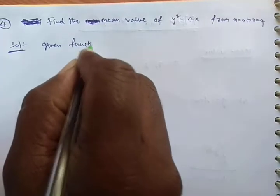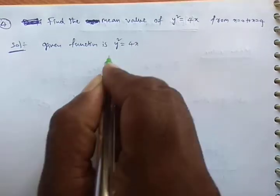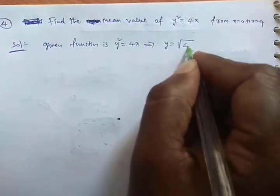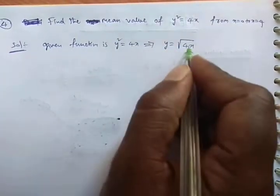Given function is y² = 4x. From this we want the y value. So y = √(4x). I am putting both sides square root, we get y = √(4x).